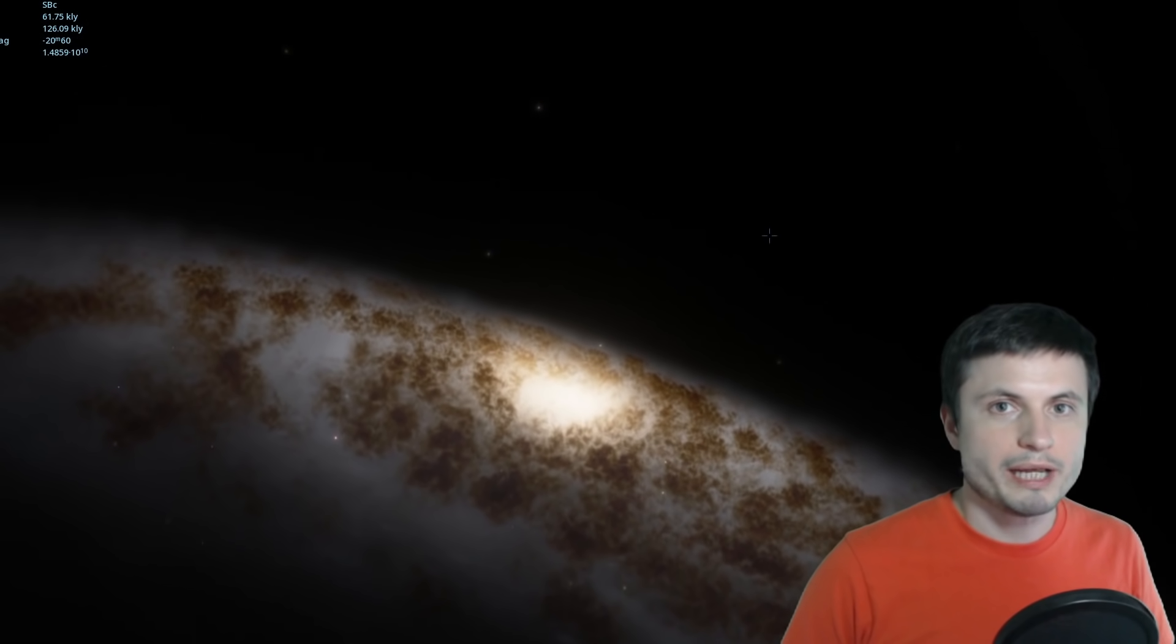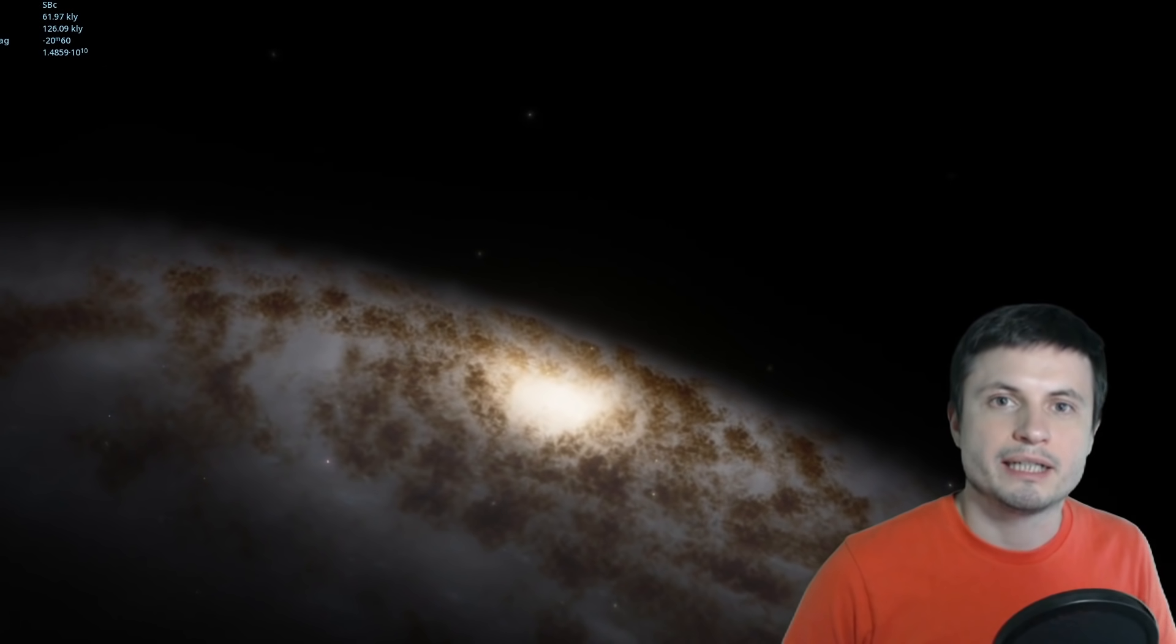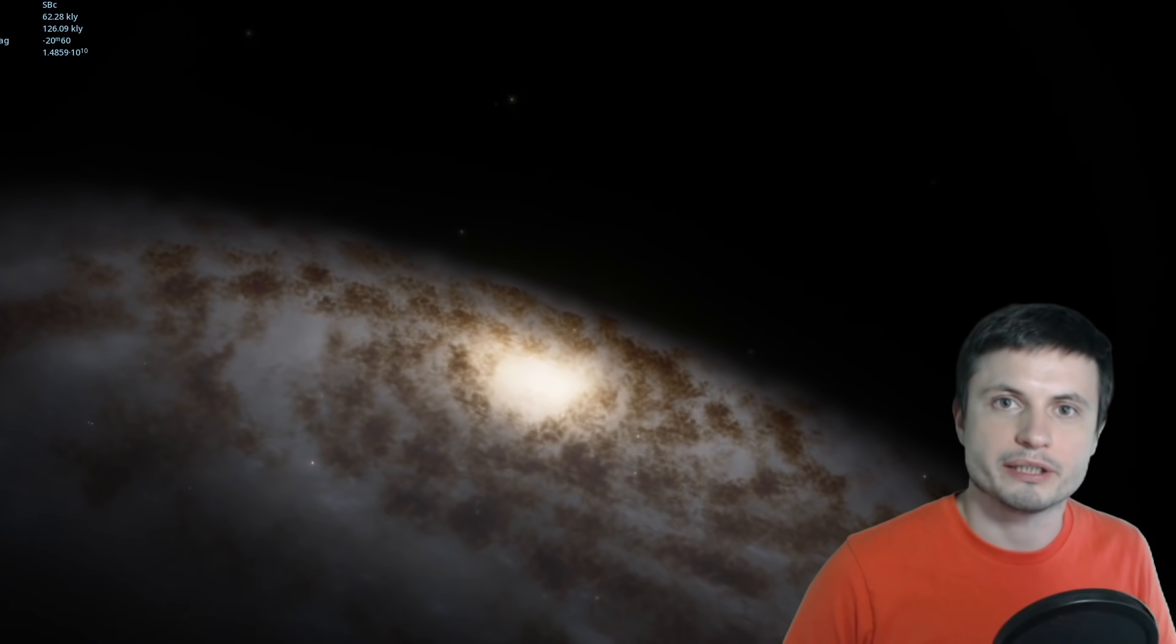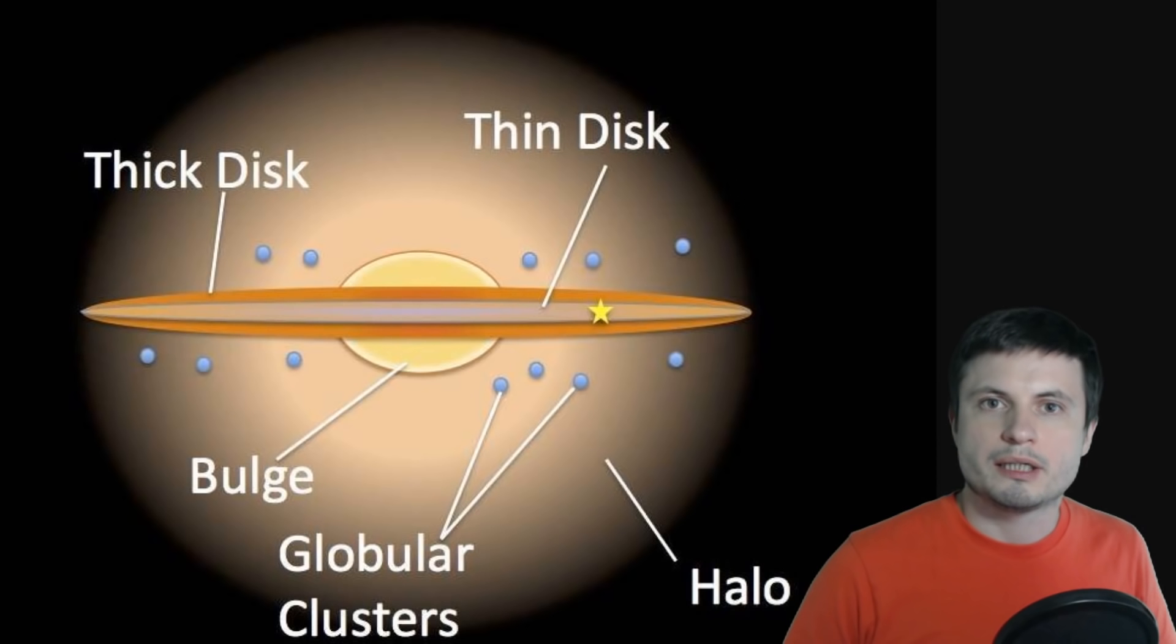So here we have to start looking at the galaxy as forming in different parts. It seems that approximately 12.8 billion years ago, this part, the bulge, was born. Most likely through the galactic collision of various small galaxies that existed about a billion years after the creation of the universe.